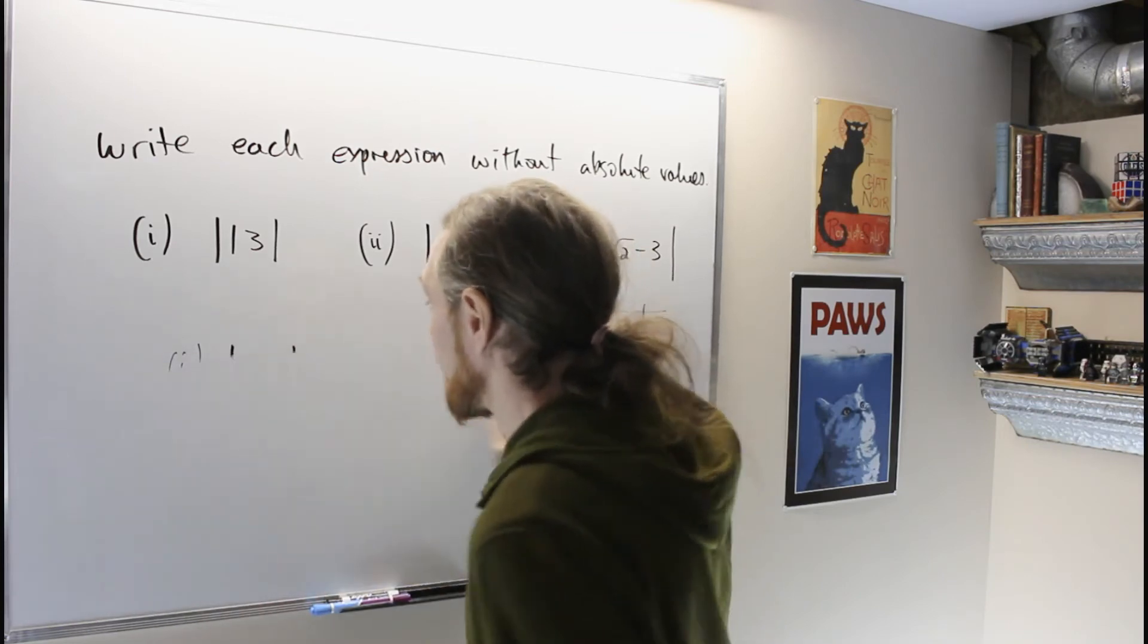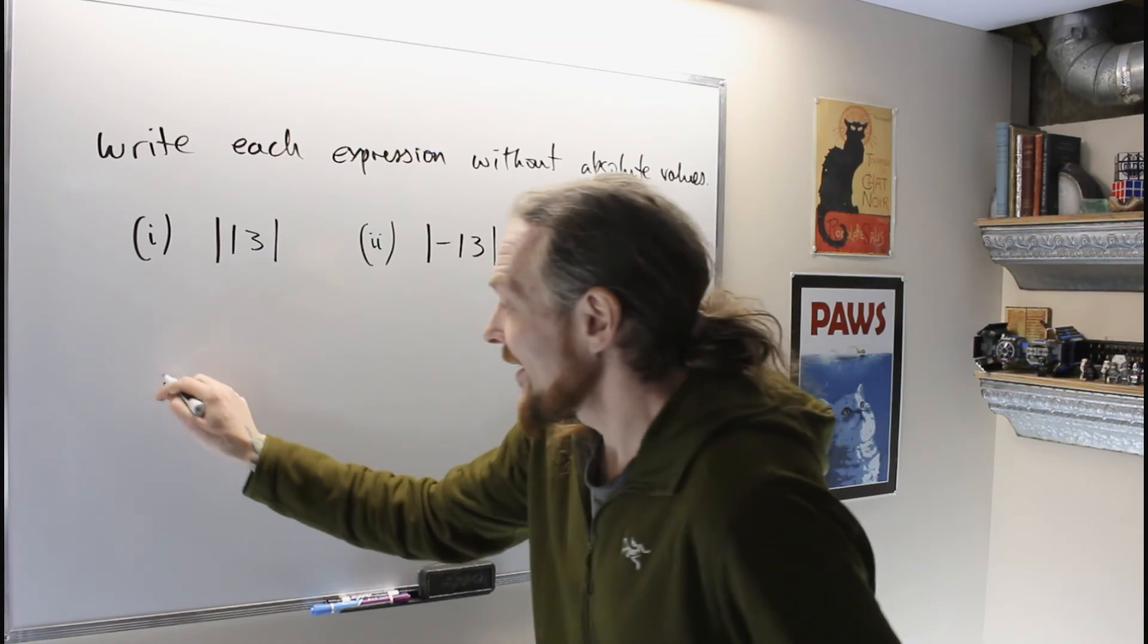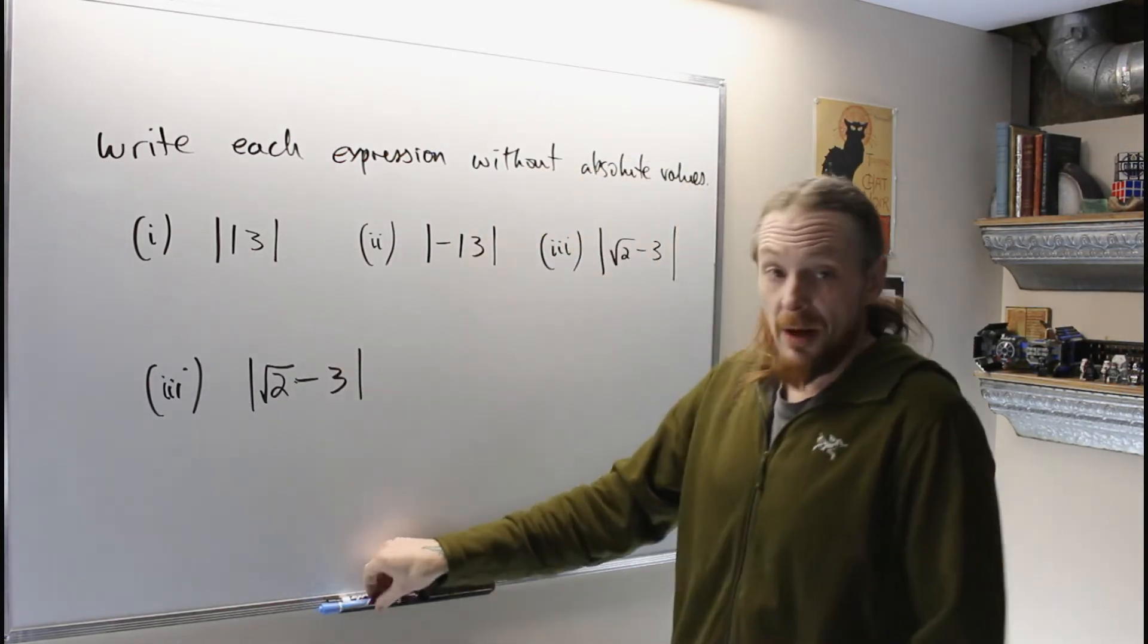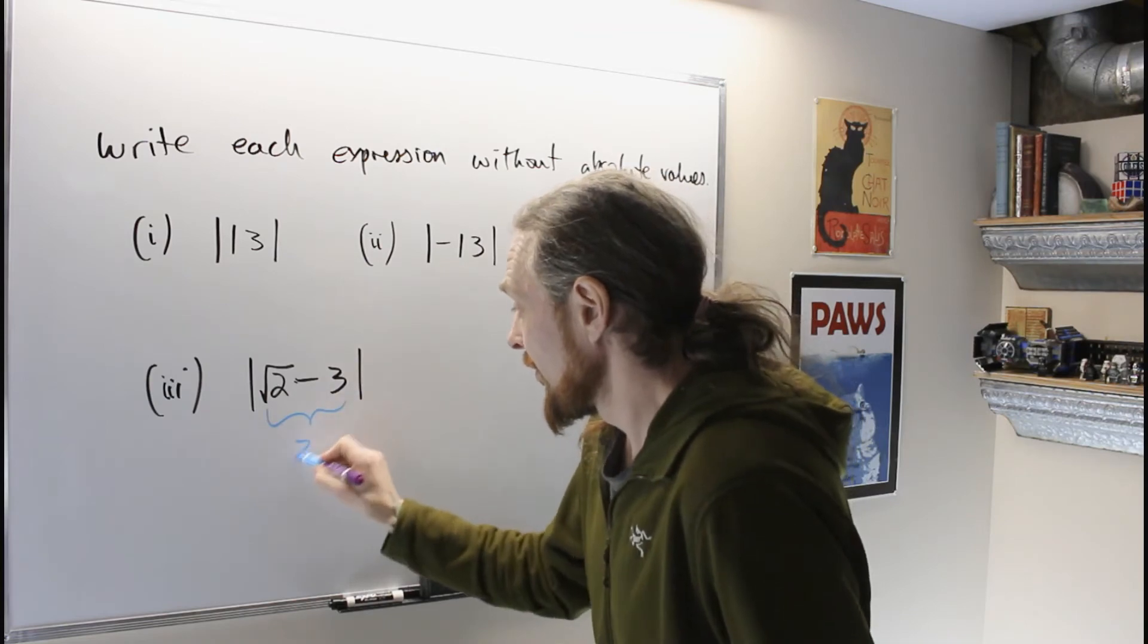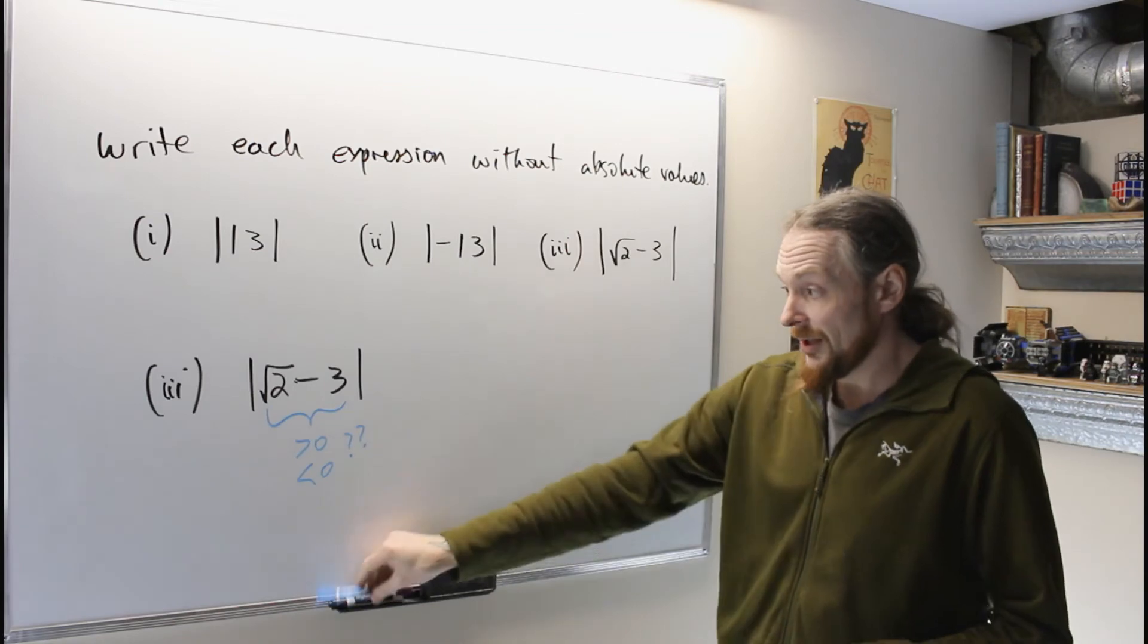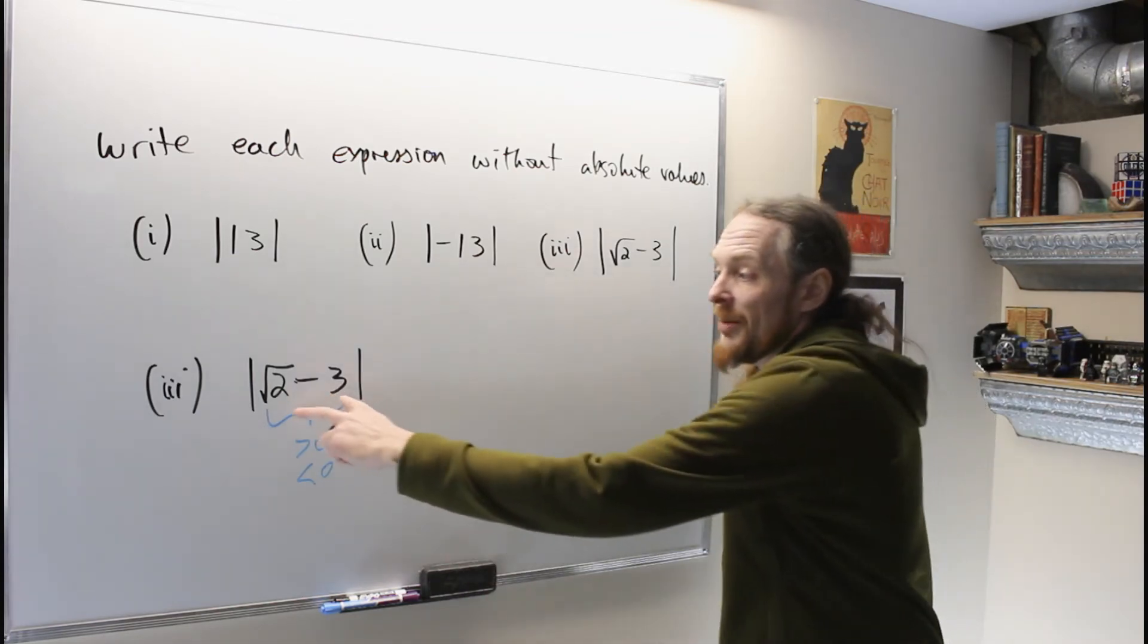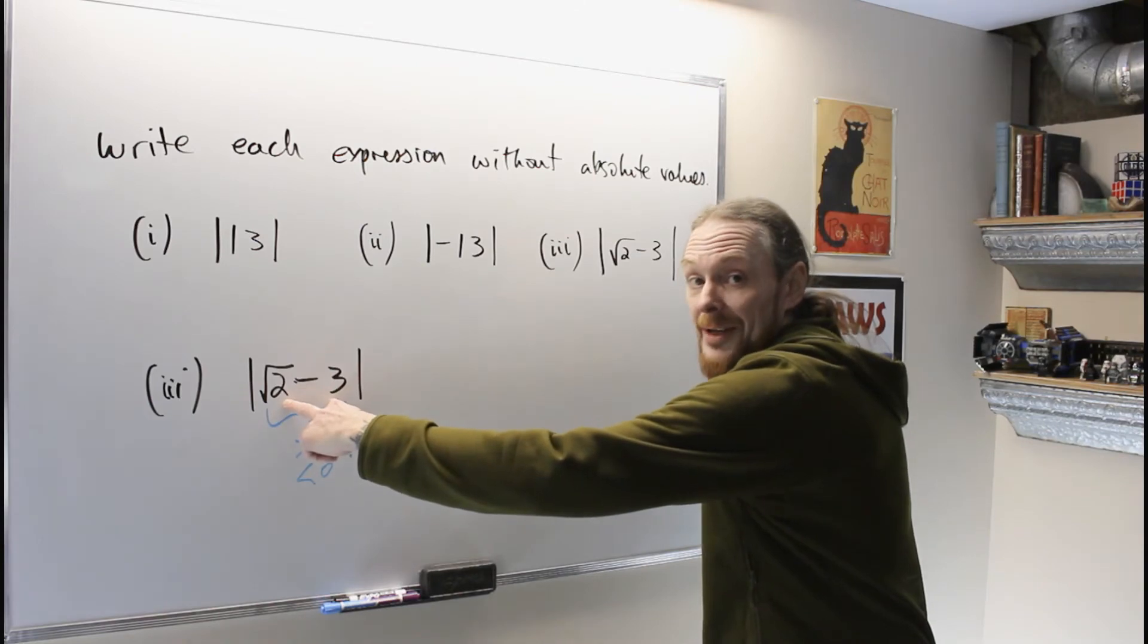Now extending that to the third one, nothing's going to change but that question we're really asking is: is the square root of two minus three positive or negative? What I really want to know is is the inside positive or negative. I don't know and I'm going to guess you don't either. So I have to do a side calculation.